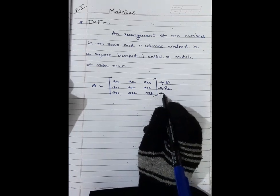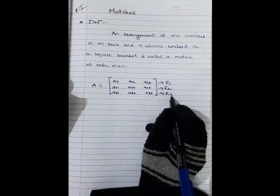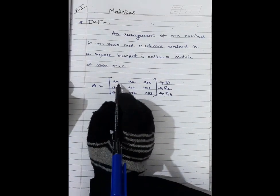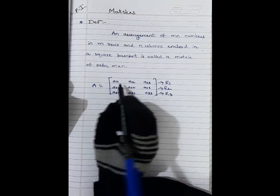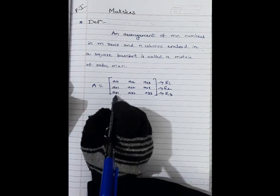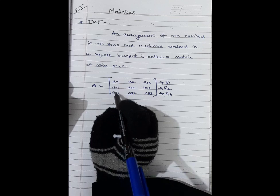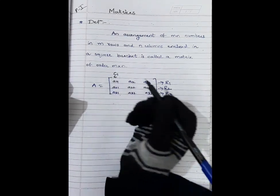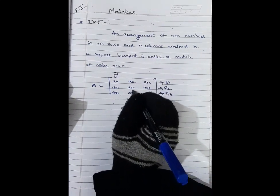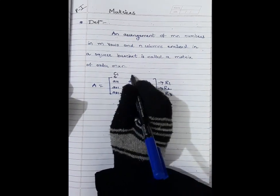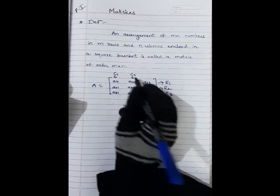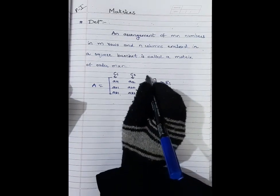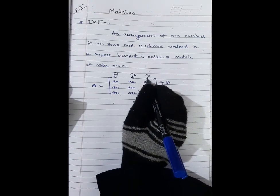Elements a₃₁, a₃₂, a₃₃ are called elements of the third row. For columns: a₁₁, a₂₁, a₃₁ are called elements of the first column C1. Similarly, a₁₂, a₂₂, a₃₂ are elements of the second column, and a₁₃, a₂₃, a₃₃ are elements of the third column.